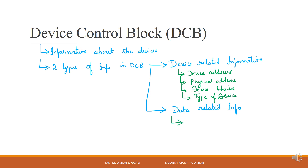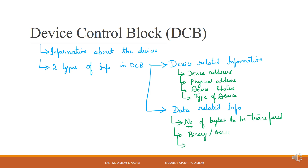The second type is data-related information. Under data-related information, we get information about the number of bytes to be transferred, whether data is to be transferred in ASCII or binary format, data area address, and current byte count.